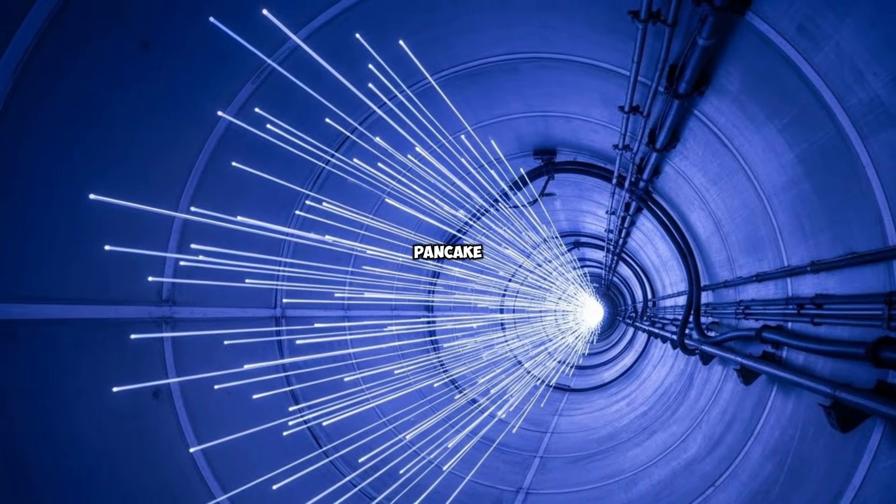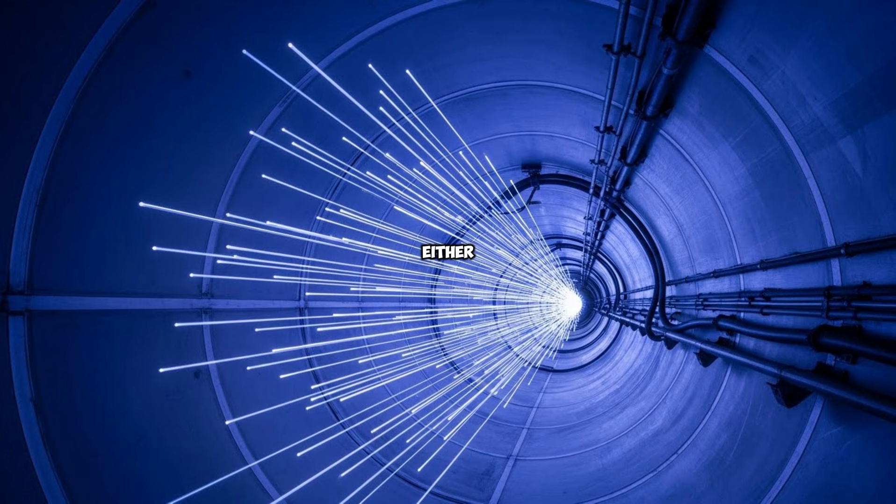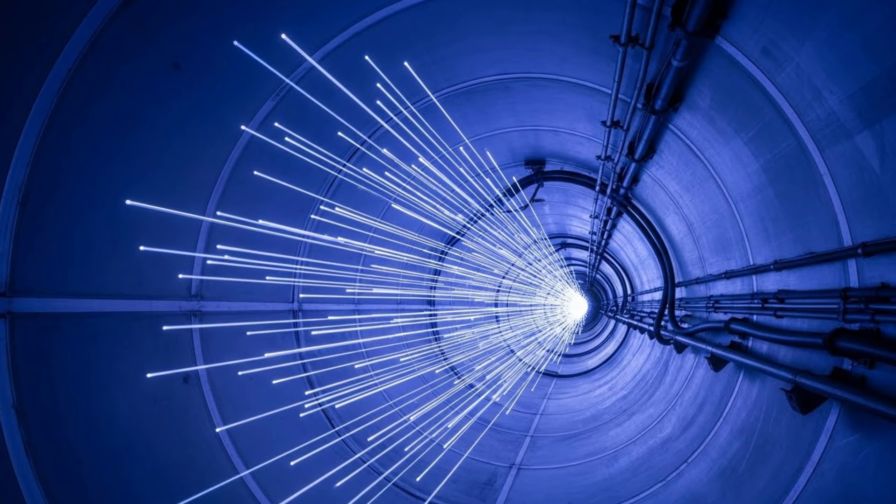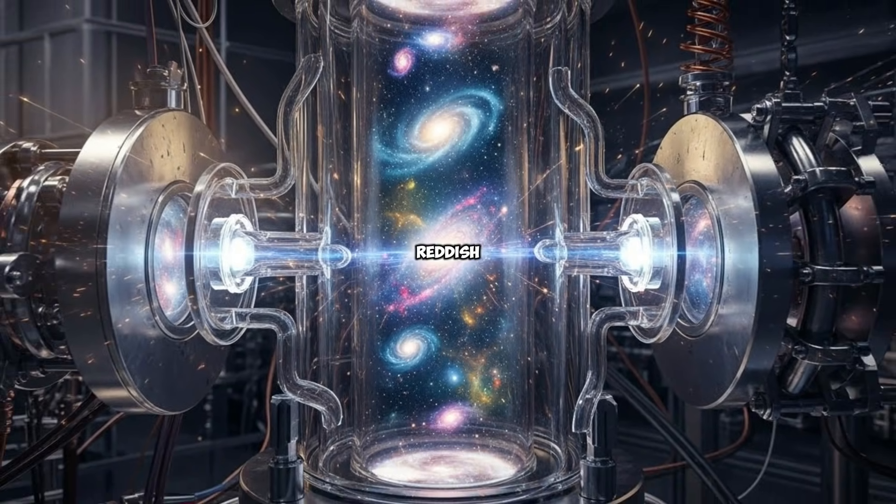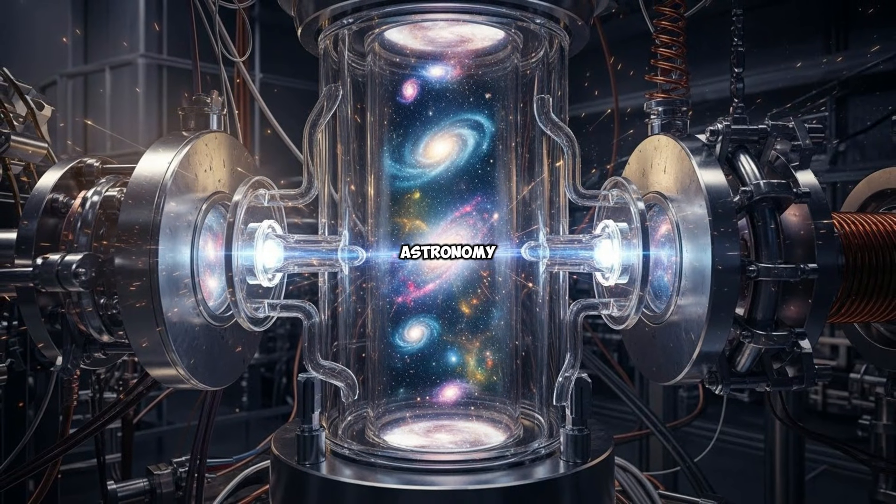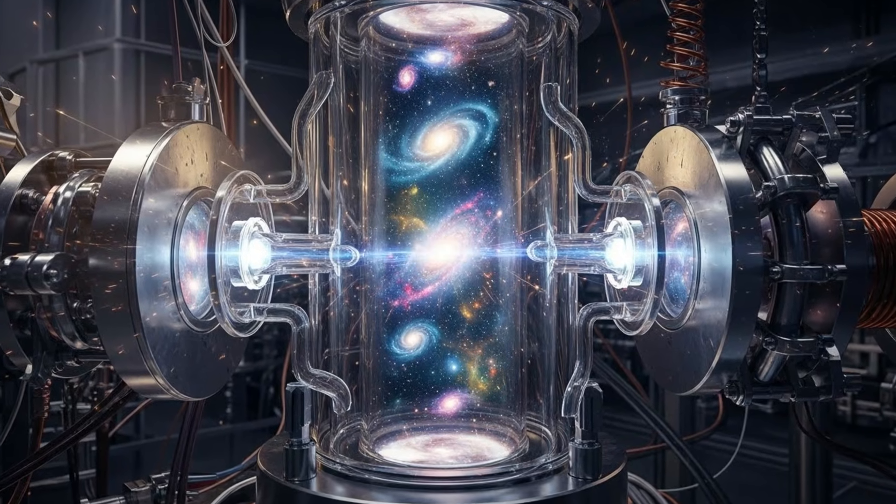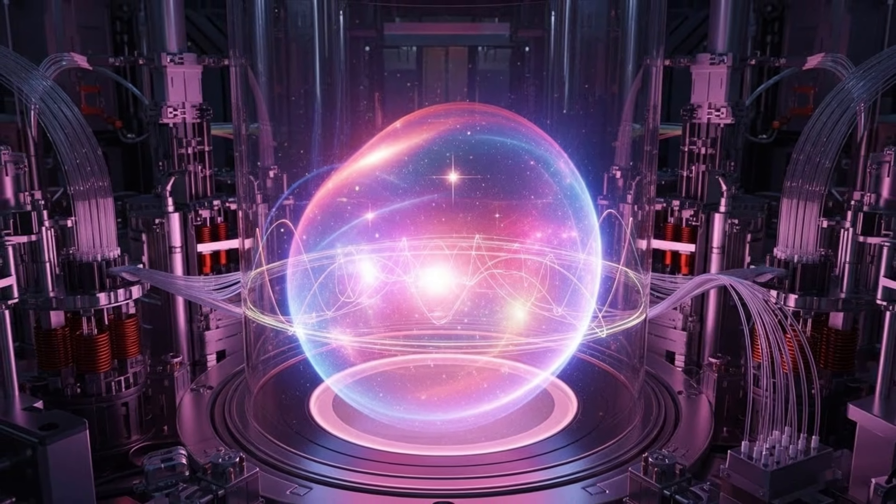To understand what happened, you need to understand what CERN was trying to do. The Large Hadron Collider, the LHC, is the most powerful particle accelerator ever built. Its purpose is simple in theory: smash particles together at near light speed and see what comes out. It's how we discovered the Higgs boson in 2012, the so-called God Particle. But the Higgs was just the beginning.